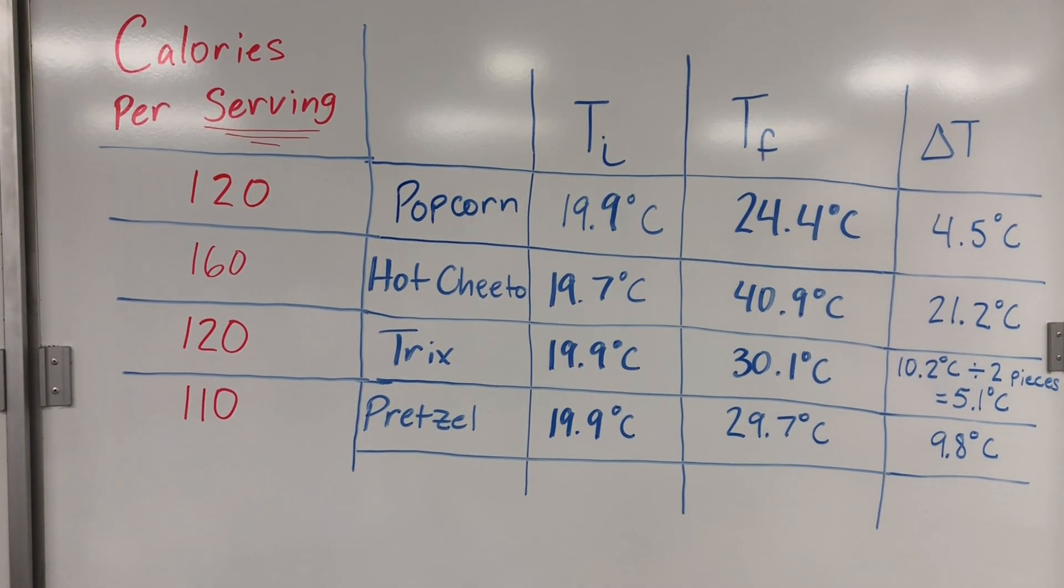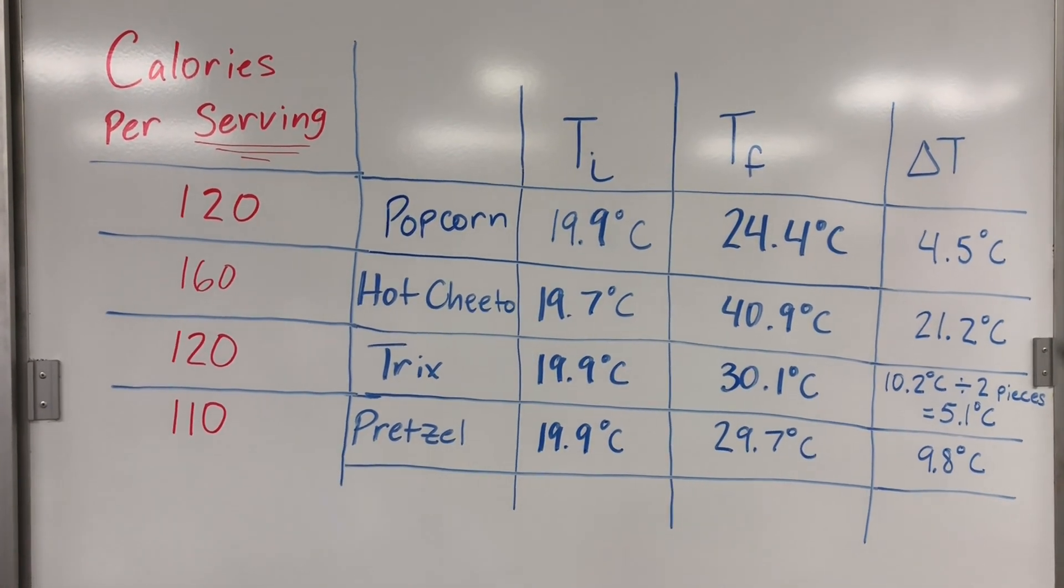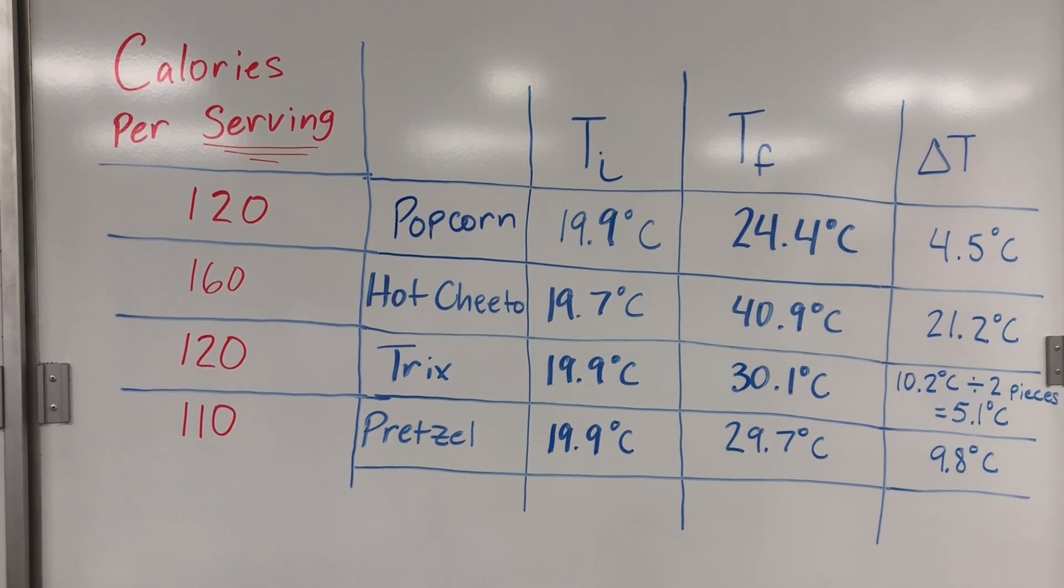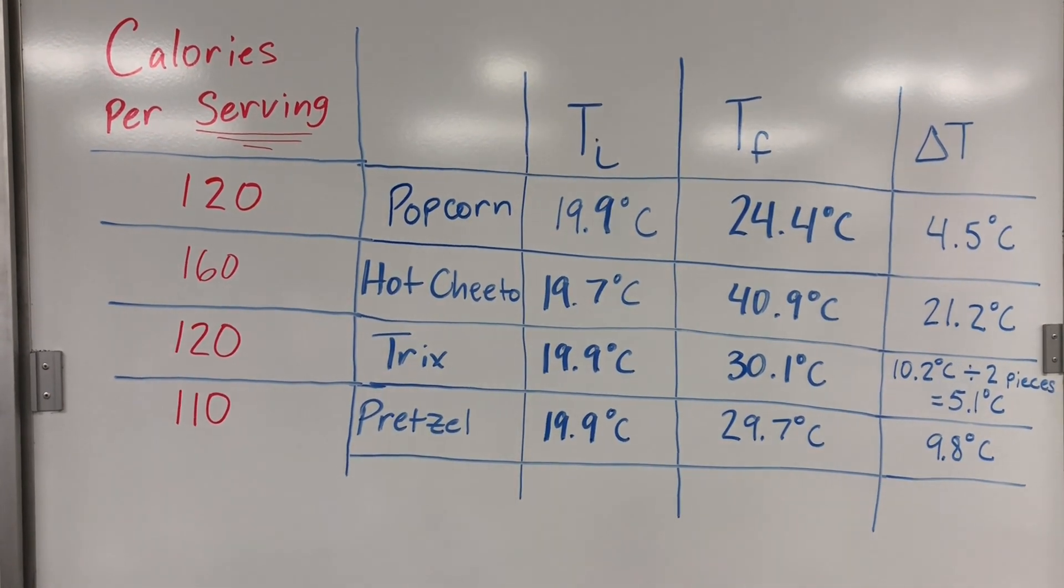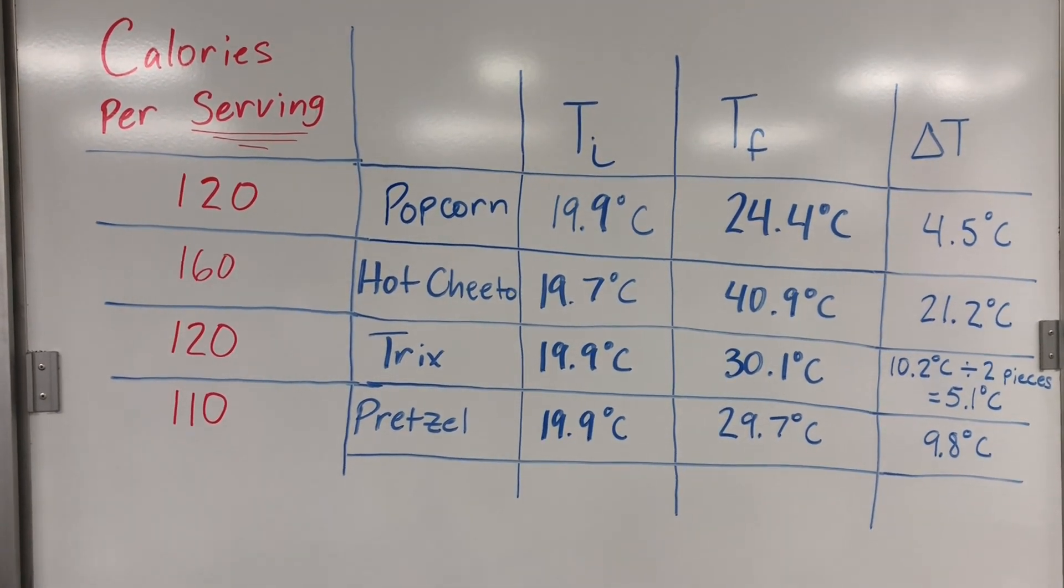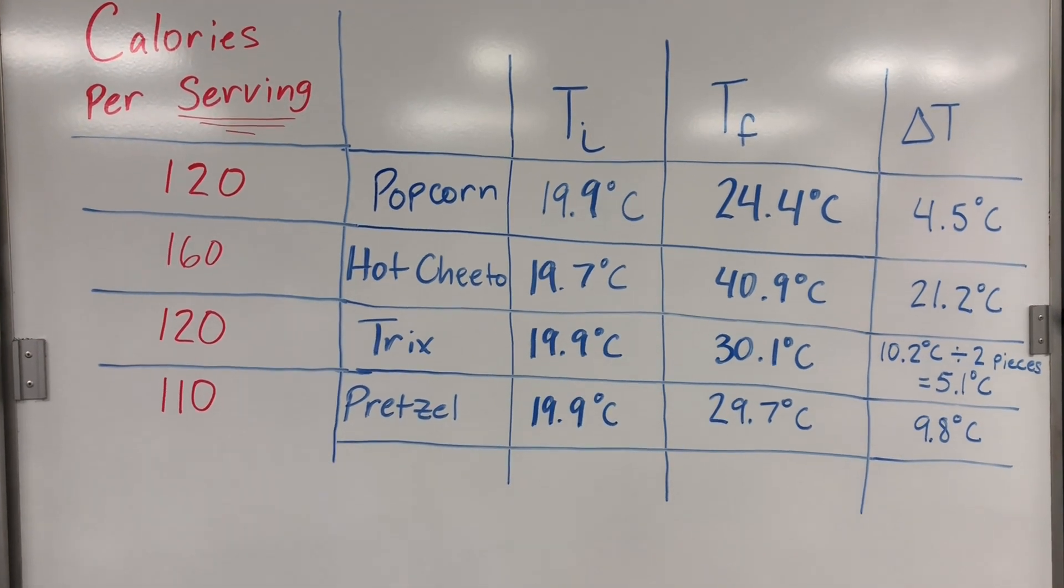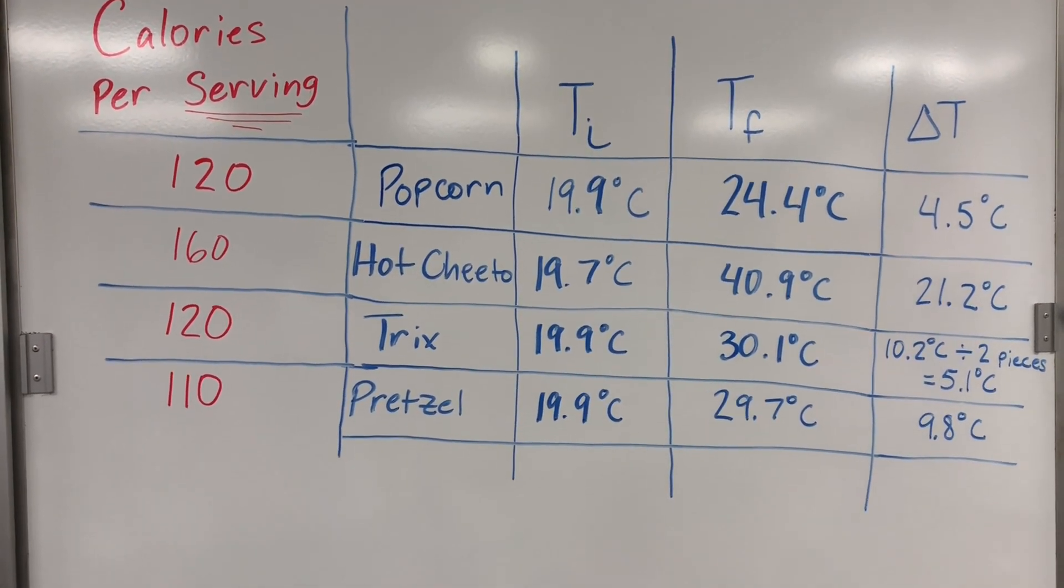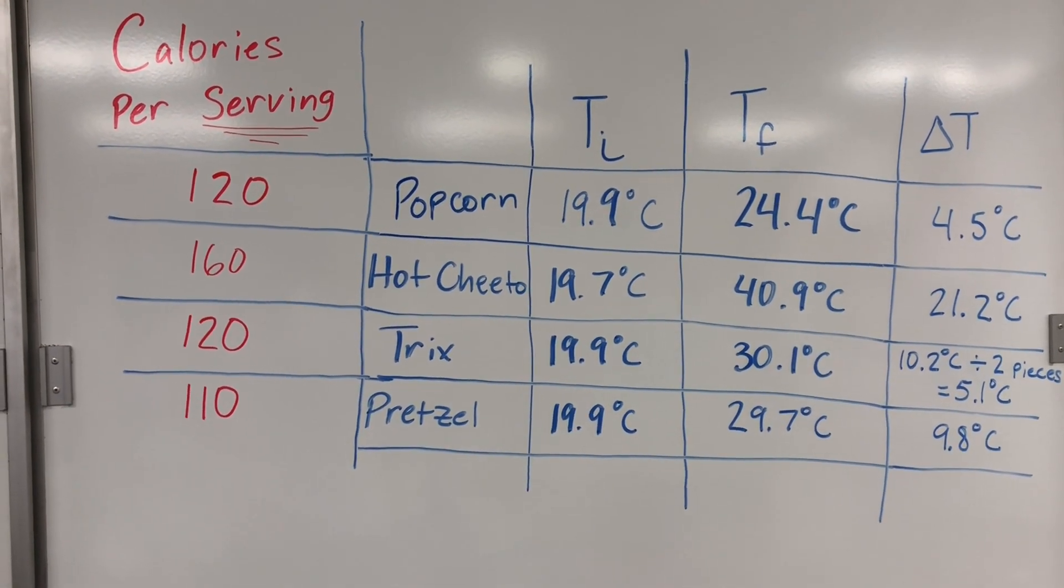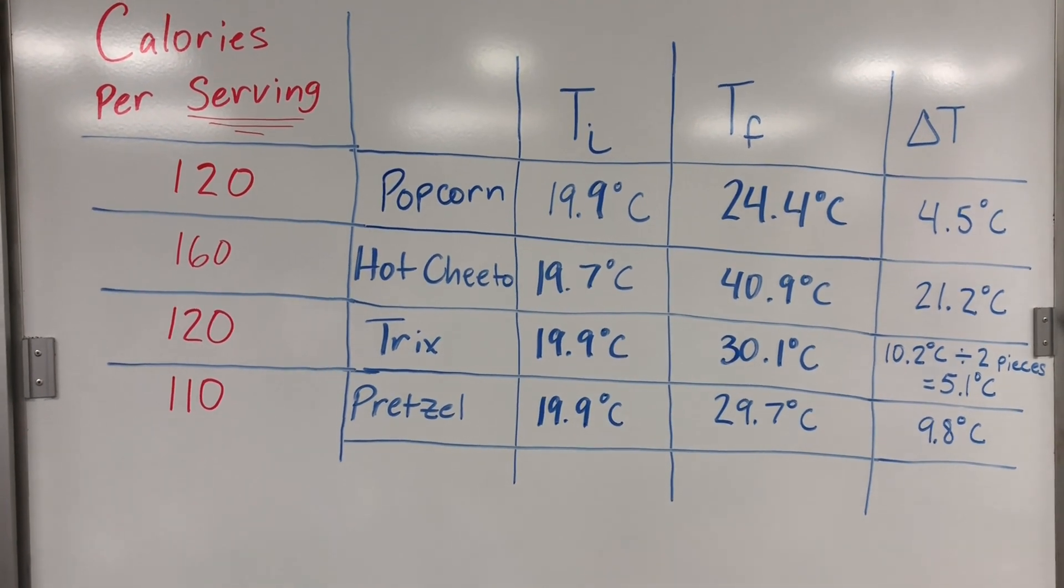Now if we compare the change in temperature to the calories per serving, there are a couple things we should take into account which I'll talk about in a minute. But we can see that the object with the most calories per serving is the Hot Cheeto, and it obviously increased the temperature of the water the most out of all of these objects. Now Trix and popcorn have technically the same calories per serving, and they were at about 5.1 degrees Celsius and 4.5, which is pretty close, especially for how rough our experiment was. Those are both a little bit higher than the pretzel at 110 calories per serving, but the pretzel heated up water more than the popcorn and the Trix did.